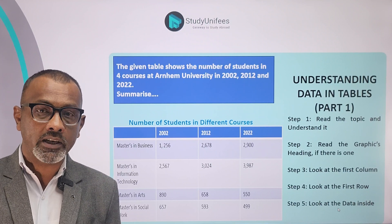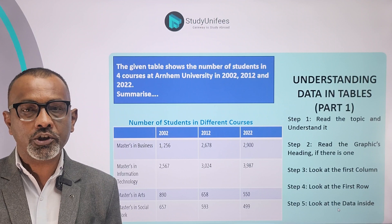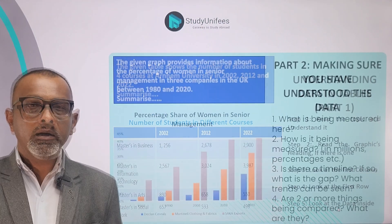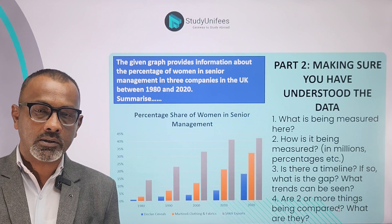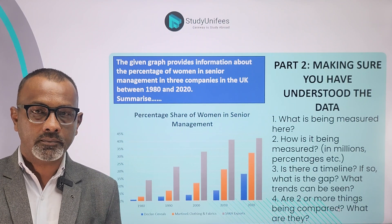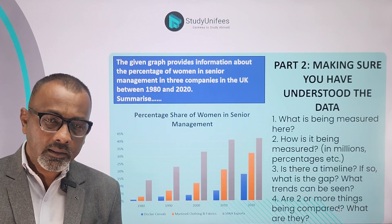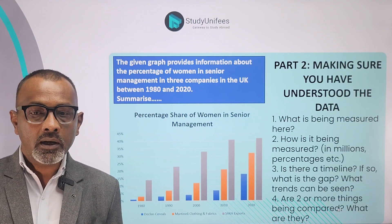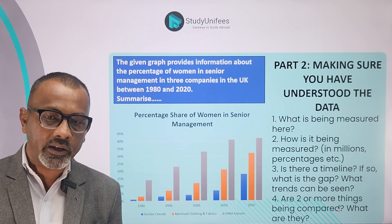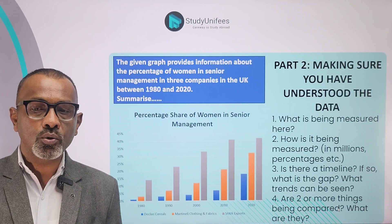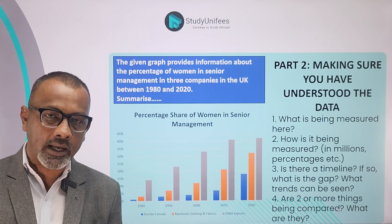Now we come to step 2 of the analysis — making sure that you have understood everything perfectly. In step 2, we ask ourselves 4 simple questions and answer them. Question number 1: what is being measured here? In this case, what is being measured is the percentage of women in senior management positions in 3 companies. Question number 2: how is it being measured? In this case, it's being measured in percentages.